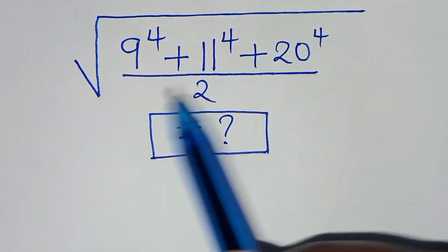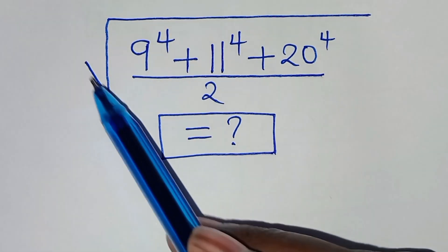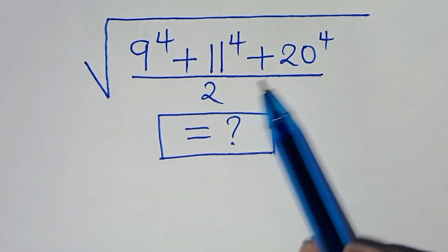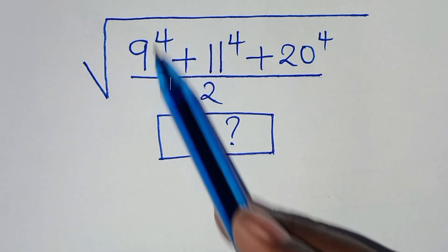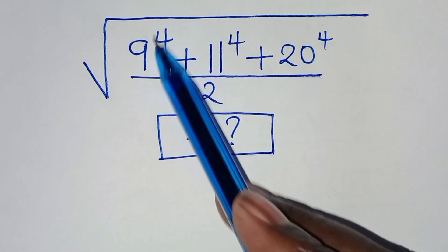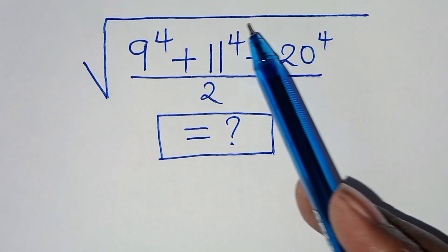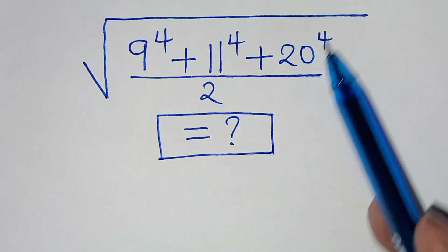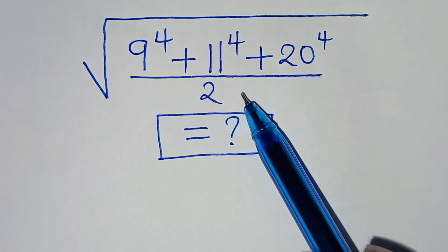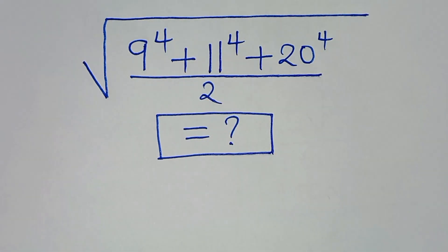Hello everyone, you are welcome to solve this nice square root math problem, which is the square root of 9 to the power 4, plus 11 to the power 4, plus 20 to the power 4, all over 2. So how do we solve this problem?